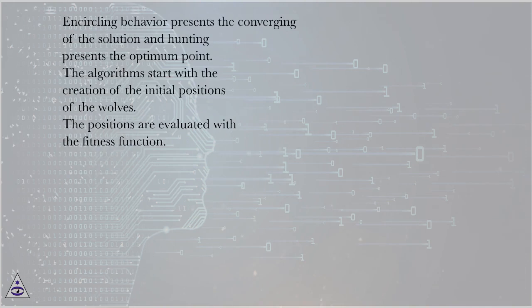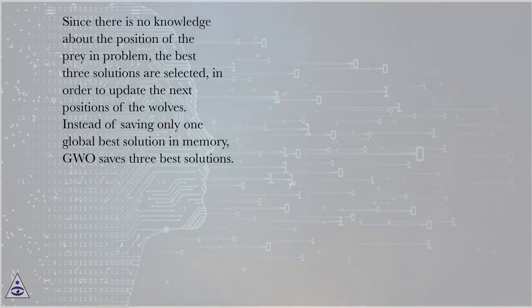Encircling behavior presents the converging of the solution and hunting presents the optimum point. The algorithms start with the creation of the initial positions of the wolves. The positions are evaluated with a fitness function. Since there is no knowledge about the position of the prey in problem, the best three solutions are selected, in order to update the next positions of the wolves.